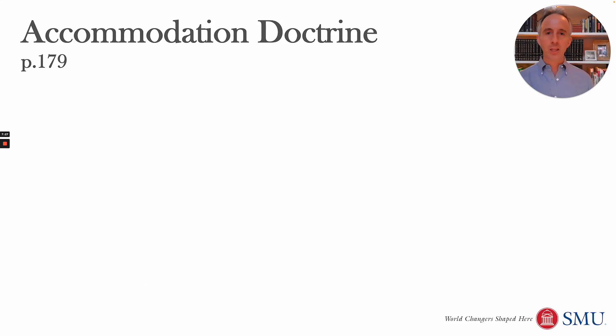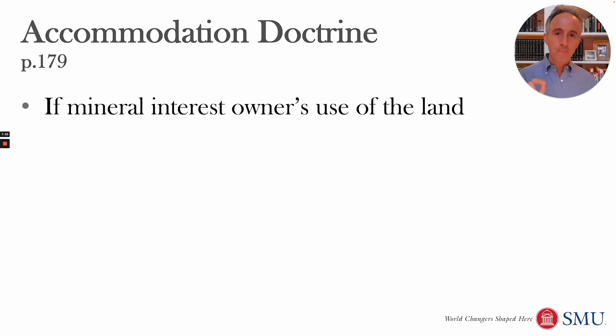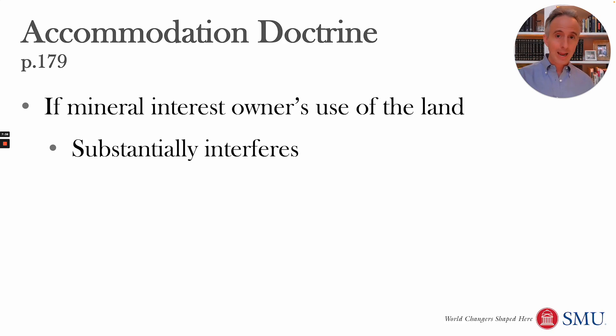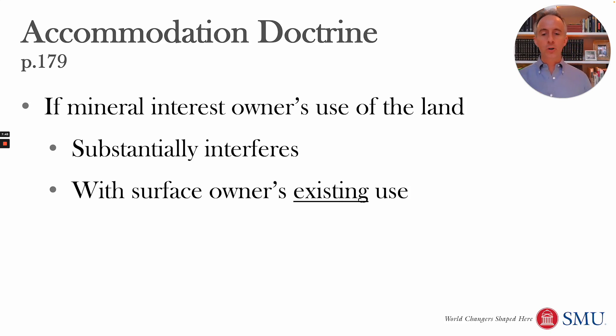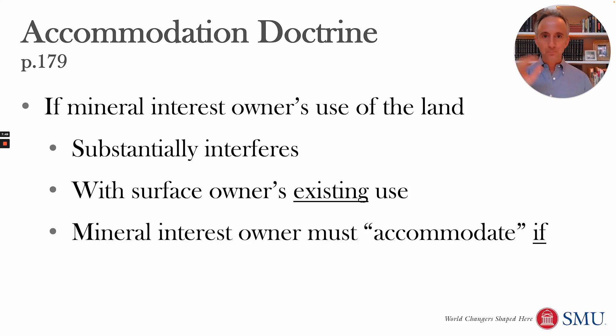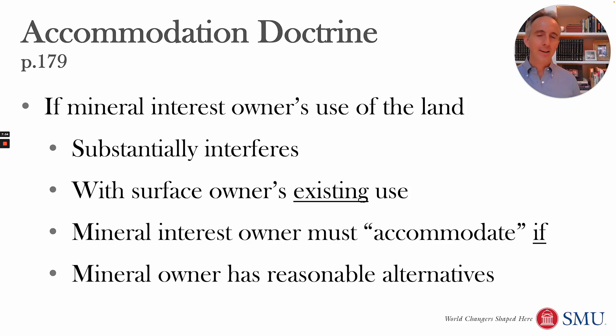The accommodation doctrine says that if the mineral interest owner's use — or the oil and gas lessee's use — of the land substantially interferes with the surface owner's existing use, then the mineral owner has to accommodate that existing use if there are reasonable alternatives. This is why you can't knock down the landowner's house or barn if you have other places where you can drill that well, because that would substantially interfere with the existing use of the land.